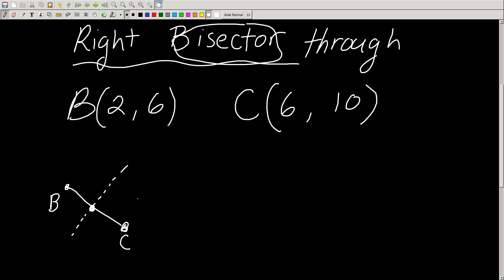And it's going to go through at a 90-degree angle, hence the word right. That's what a right bisector is: a line through the middle at a right angle.